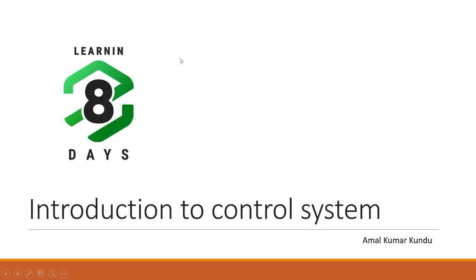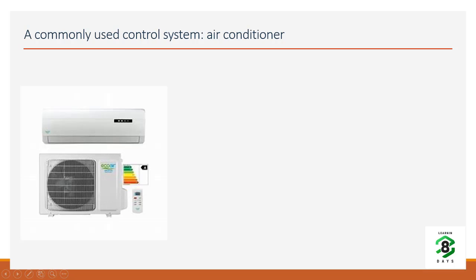Today I will explain the basic concept of a control system and where we use these concepts. I'll start with a very common example from daily life. An air conditioner is a system which maintains a desired temperature in a closed room or closed area, and the purpose of it is to maintain the temperature of that closed area which is set by the user.